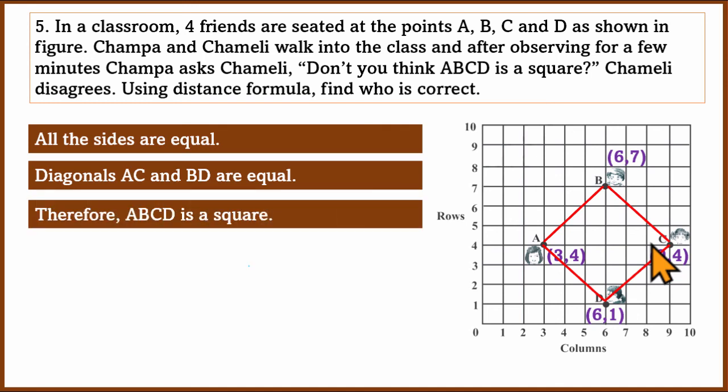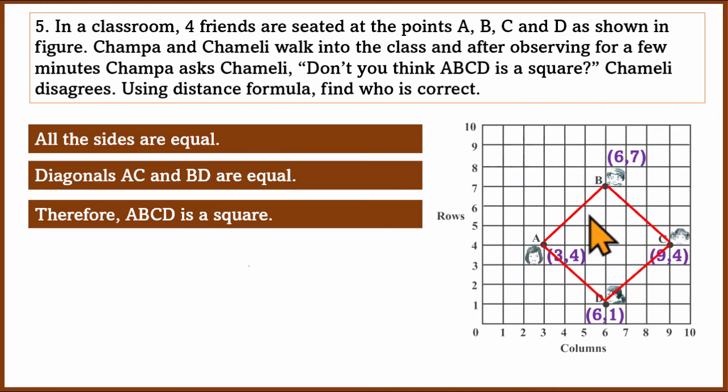Therefore, ABCD is a square. Champa is correct, and Chameli is wrong. So this is how the problem is solved using the distance formula. If you have any doubts, you can ask. In the next video, we will solve other exercises and problems. Thanks for watching. See you soon. Bye.